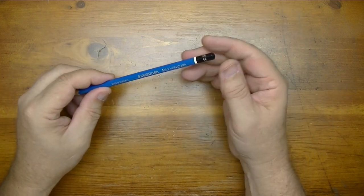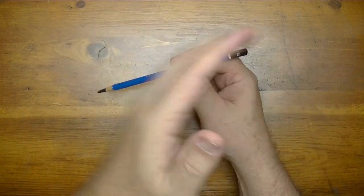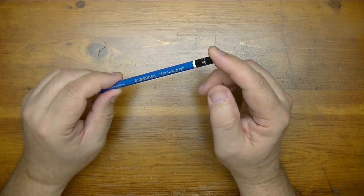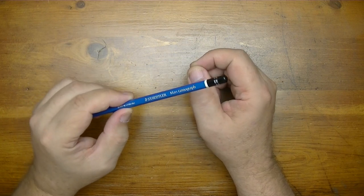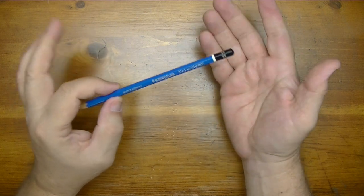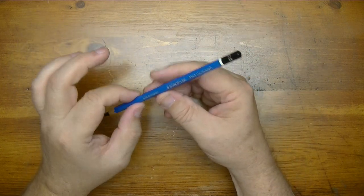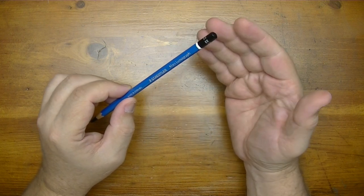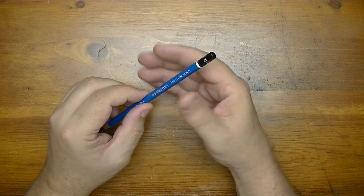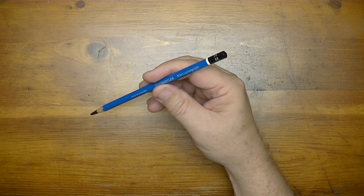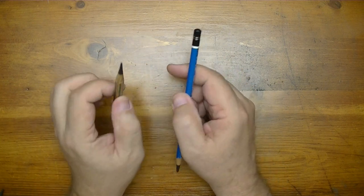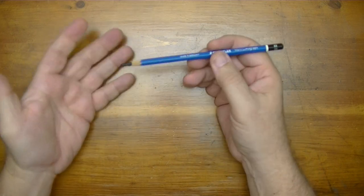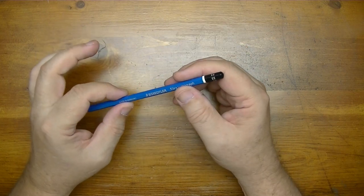Through my research on the Staedtler Mars Lumograph pencils, it has been said that the EE is more of an old standard, like they had the EXB and the EB EE - it's supposed to be like HB. The 8B is basically the replacement for the EE. We're going to test that in this video to see if the 8B and the EE are the same.